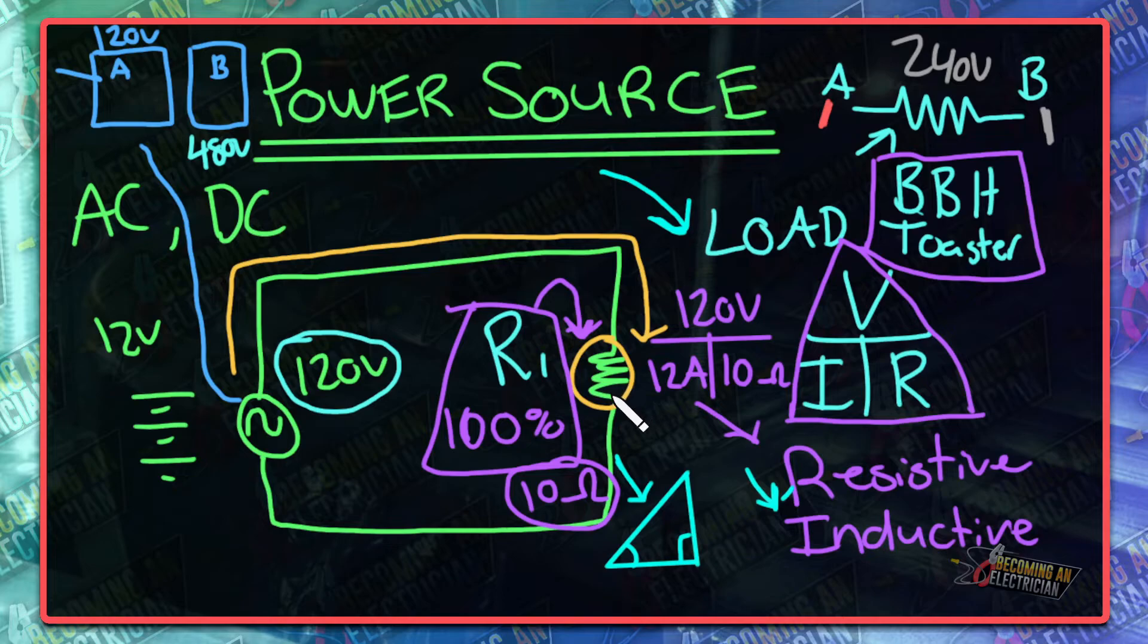So the power source is what is giving this circuit power. The electrical load is what is consuming power. When you are doing this kind of math stuff, if it's purely resistive you can use Ohm's law, this triangle like right off the board. Don't worry about anything else.